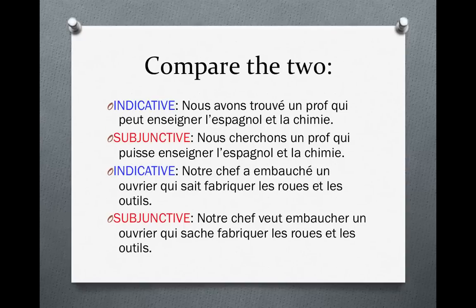Let's compare now. Indicative: Nous avons trouvé un prof qui peut enseigner l'Espagnol et la chimie. Subjunctive: Nous cherchons un prof qui puisse enseigner l'Espagnol et la chimie. I would encourage you to hit pause right now, look at these and compare, and make sure you're clear on what element gives it doubt and makes you want to use the subjunctive.